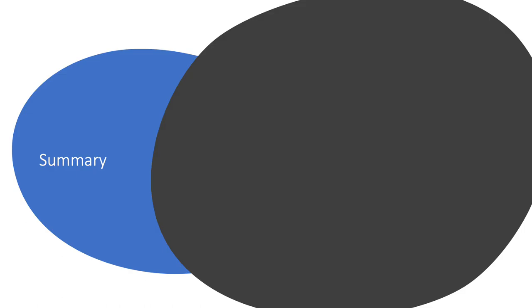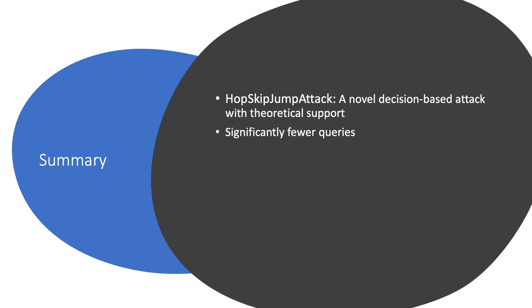Now we summarize the takeaways from this talk. First, we have proposed hop-skip-jump attack, a novel decision-based attack with theoretical support. Hop-skip-jump requires orders of magnitude fewer queries than existing decision-based attacks. We also demonstrate it is capable of fooling several widely used defense mechanisms, including defensive distillation, region-based classification, and adversarial training. Finally, we successfully fooled a non-differentiable random forest with hop-skip-jump.